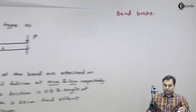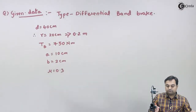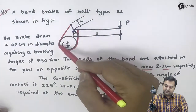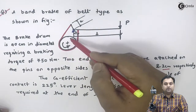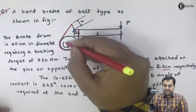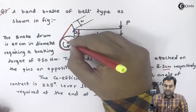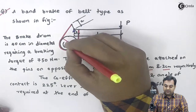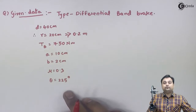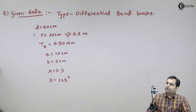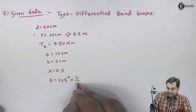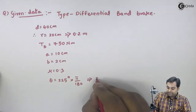The coefficient of friction is 0.3 — this is the coefficient of friction between the brake band and the brake drum. The brake band is red in color and the brake drum is shown in black. The angle of contact between them is 225 degrees, denoted by theta. We need to convert this to radians by multiplying by pi and dividing by 180, so theta becomes 3.93 radians.